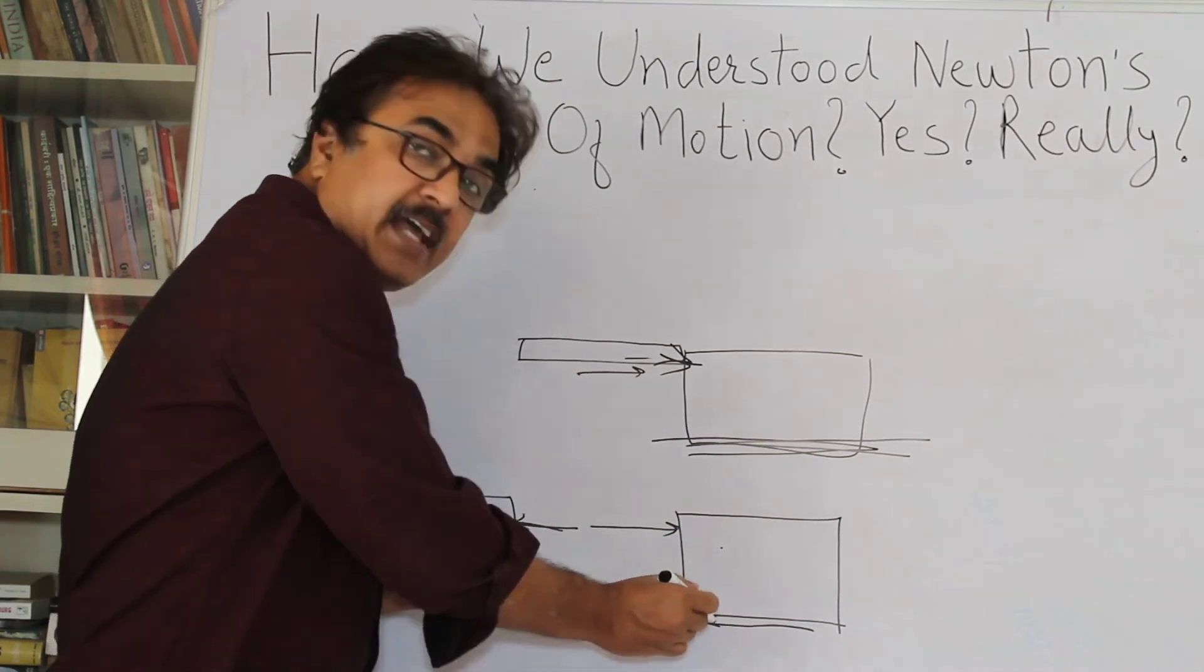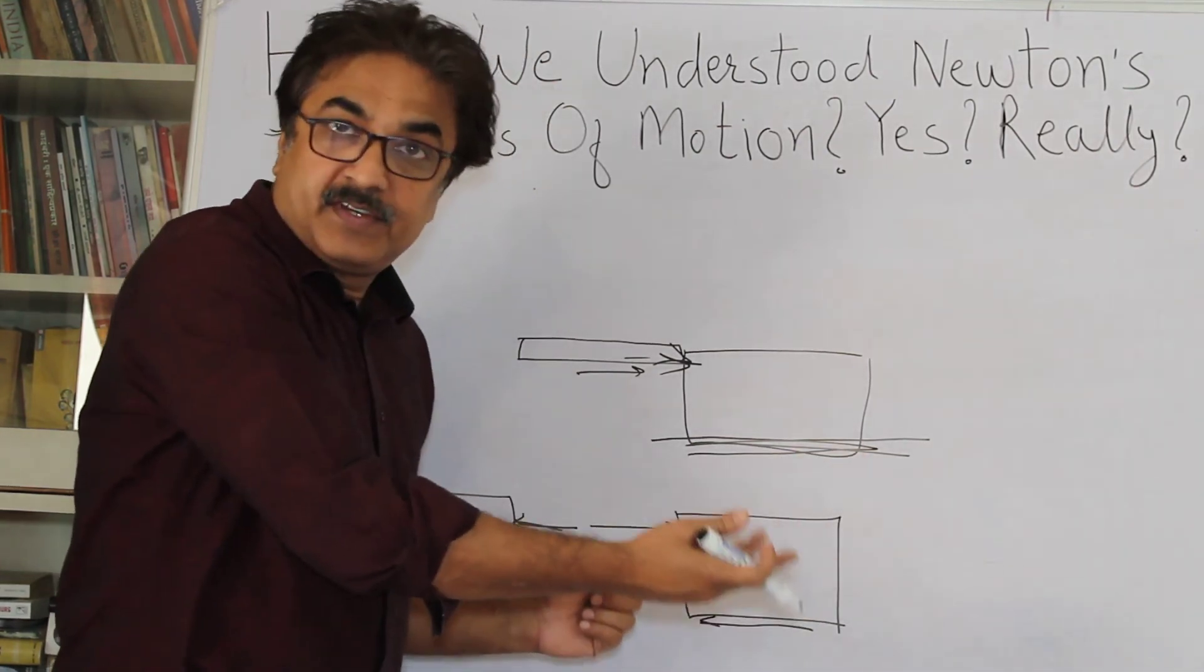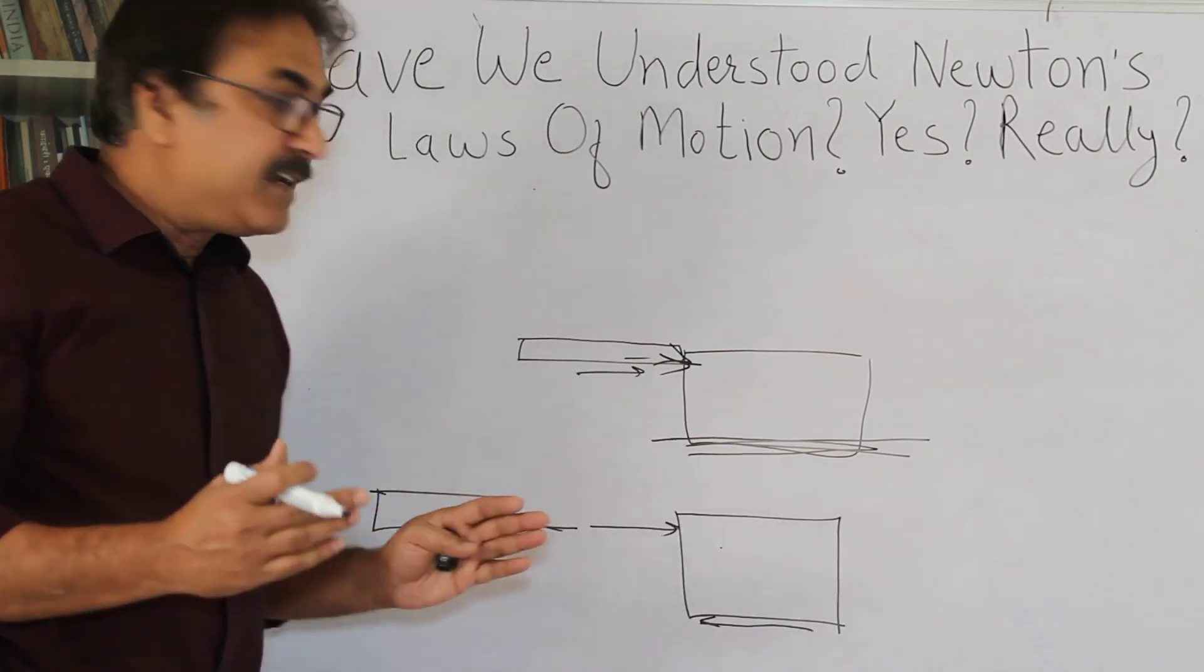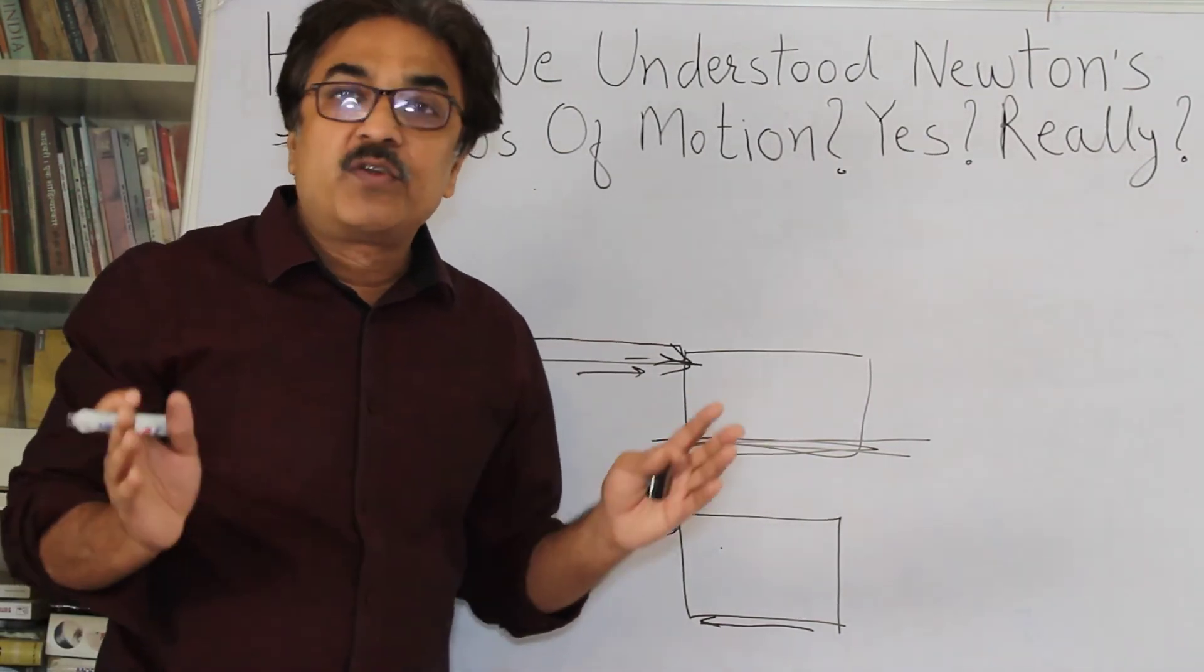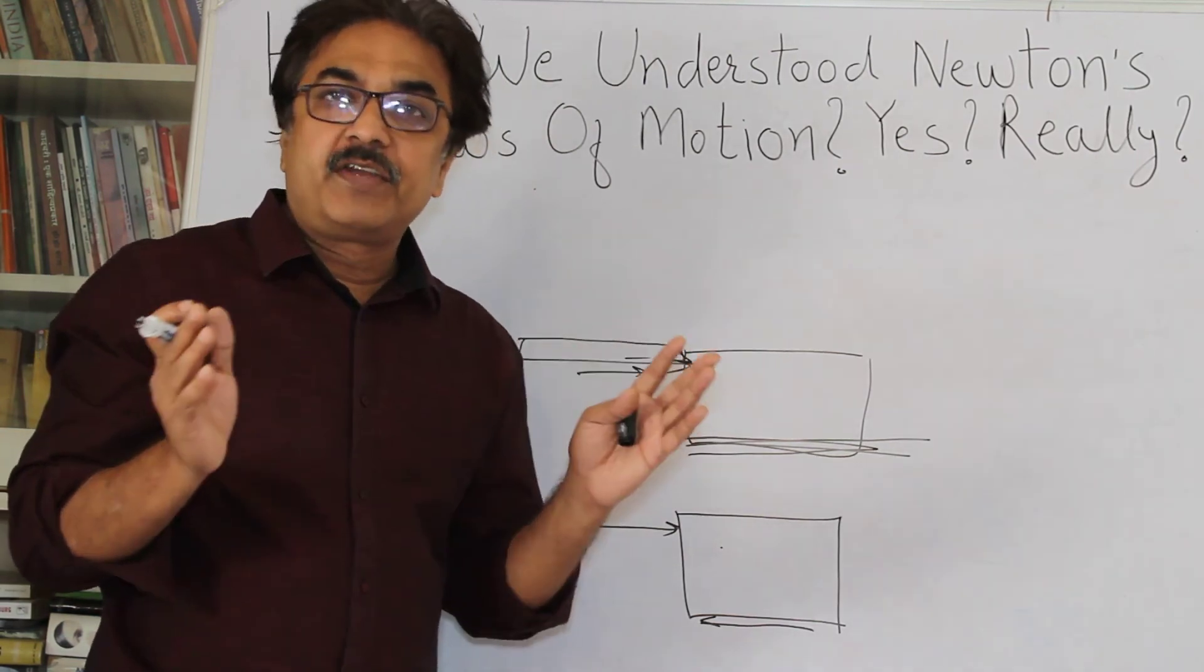And if this force is more than this force, the body would move. Right? So, action and reaction, action and reaction are equal and opposite. But then, they don't cancel out. We have to draw the free body diagrams.